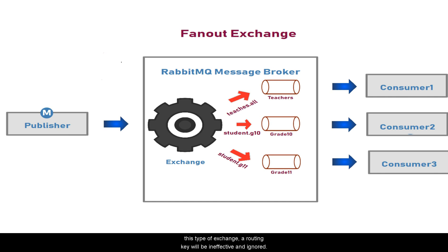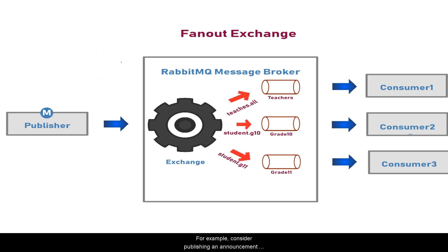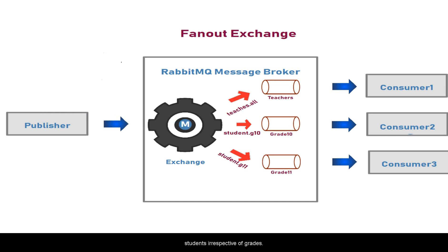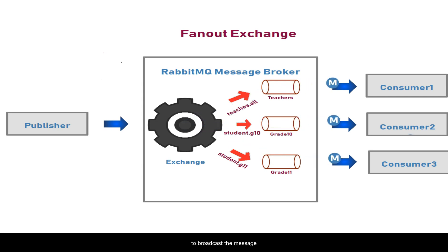Since the messages are routed to all queues in this type of exchange, a routing key will be ineffective and ignored. The main use case of fanout exchange is broadcasting a message. For example, consider publishing an announcement message in a school mobile application — when management wants to send a message to all students and teachers, a fanout exchange can be used to broadcast that message.